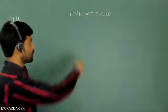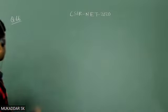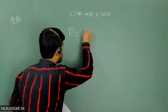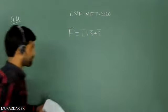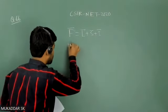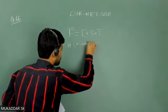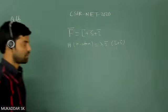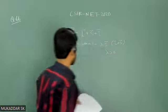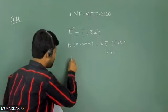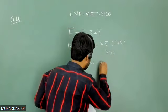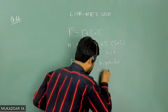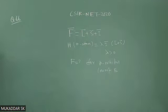Today we are going to solve a question from CSIR NET 2020 from atomic physics — question number 66, part C. The question states that you have a total angular momentum quantum number F, which equals the sum of orbital quantum number L, spin quantum number S, and nuclear spin I. The interaction Hamiltonian for a hydrogen atom is given as λ(I·L + I·S), where λ is a positive constant. You have to find the value of F for the P orbital of hydrogen atom which gives the lowest energy.